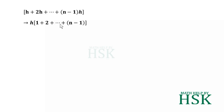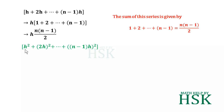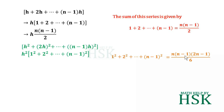Taking the terms h + 2h + ... + (n-1)h, I can factor out h to get h times (1 + 2 + ... + (n-1)), which equals h times n(n-1)/2. Similarly, h² + (2h)² + ... + ((n-1)h)² — taking h² as common gives h² times (1² + 2² + ... + (n-1)²). The sum of this series is n(n-1)(2n-1)/6, so this term equals h² times n(n-1)(2n-1)/6.